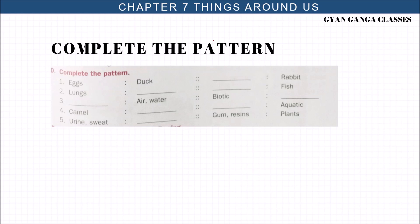Here you can see a pattern. Like eggs to duck. What reproduces by eggs? Duck. Then human to lungs. We have lungs. Humans respire. So fish respires through gills. Then air and water. These are abiotic components. And abiotic components are plants and animals. These are biotic components.